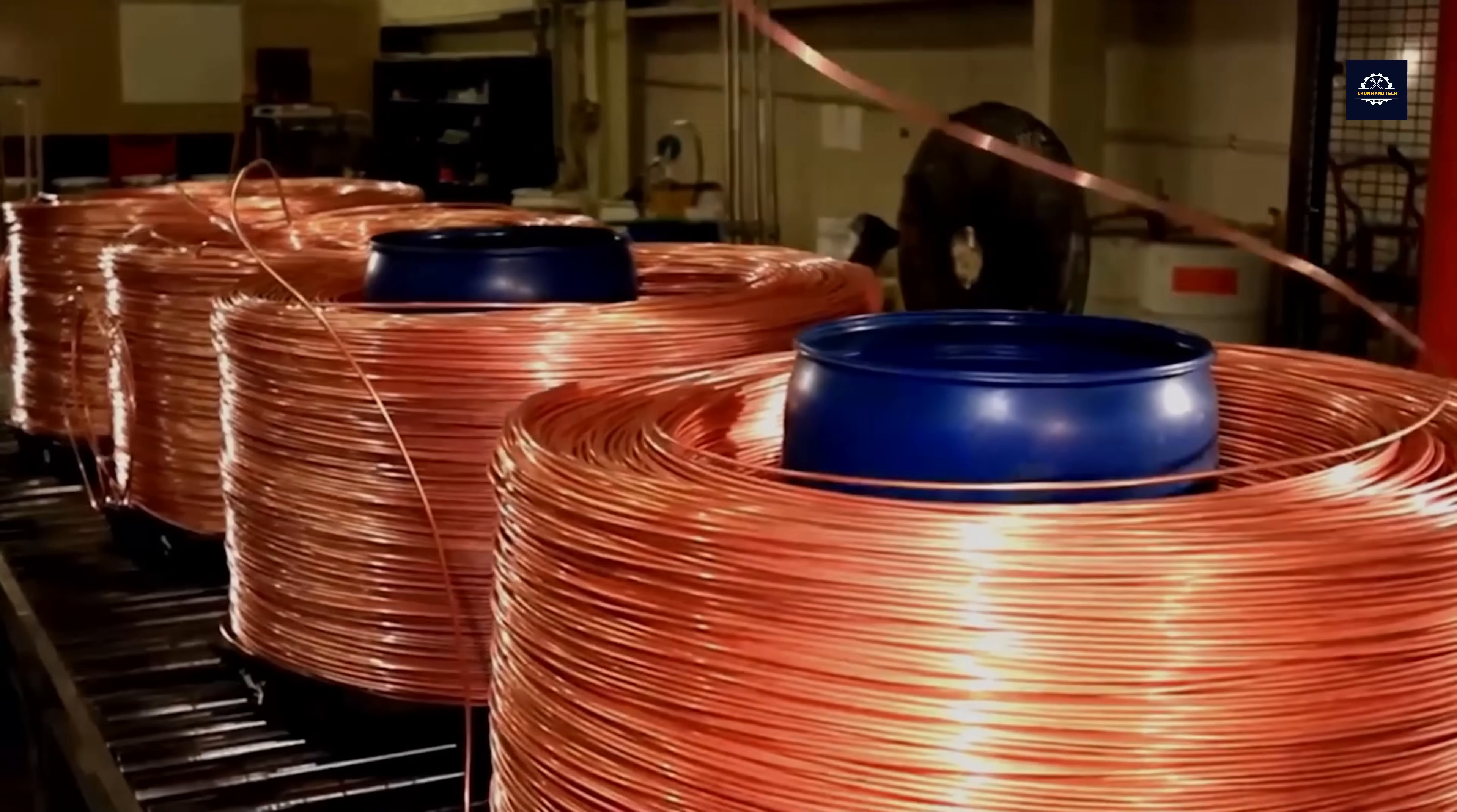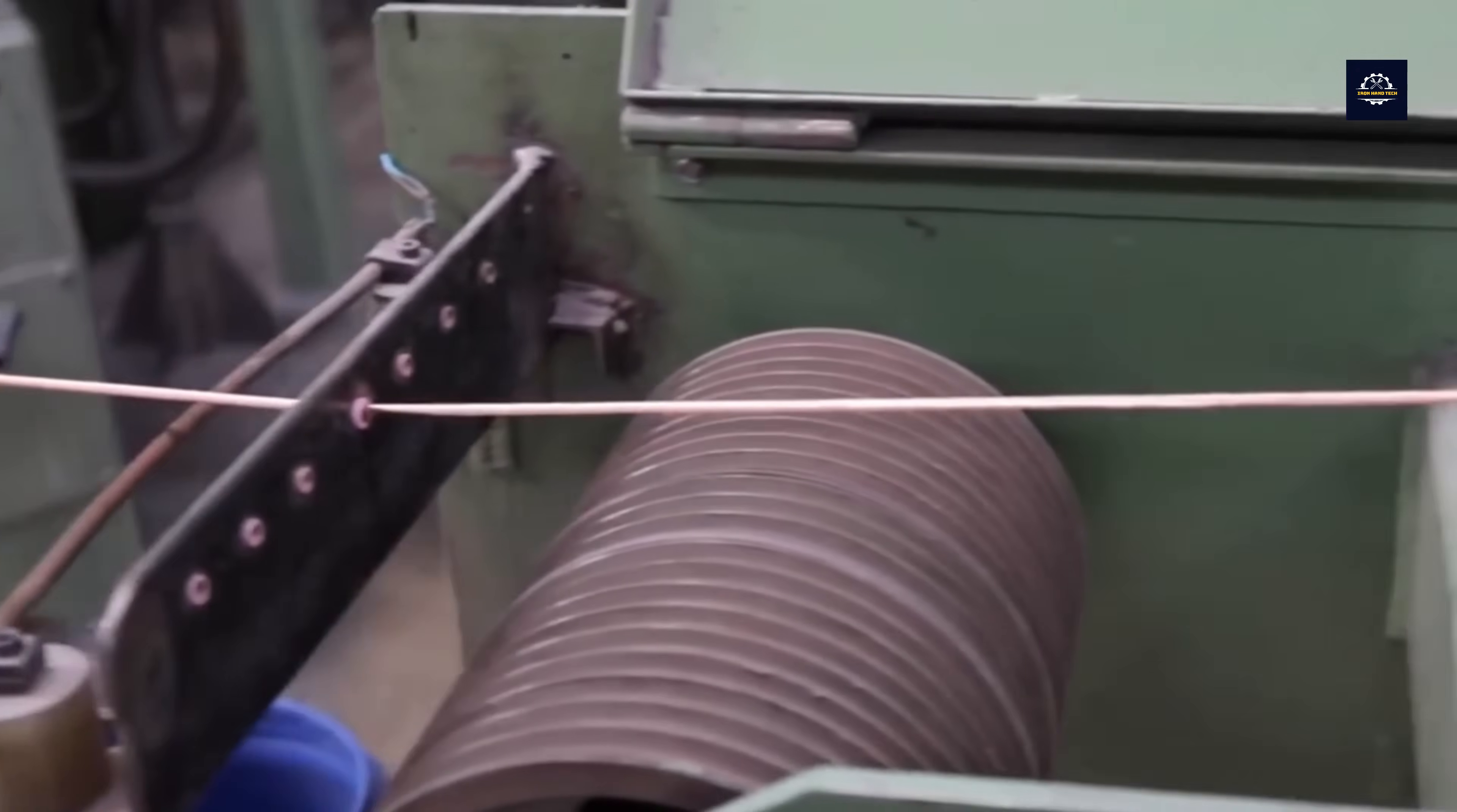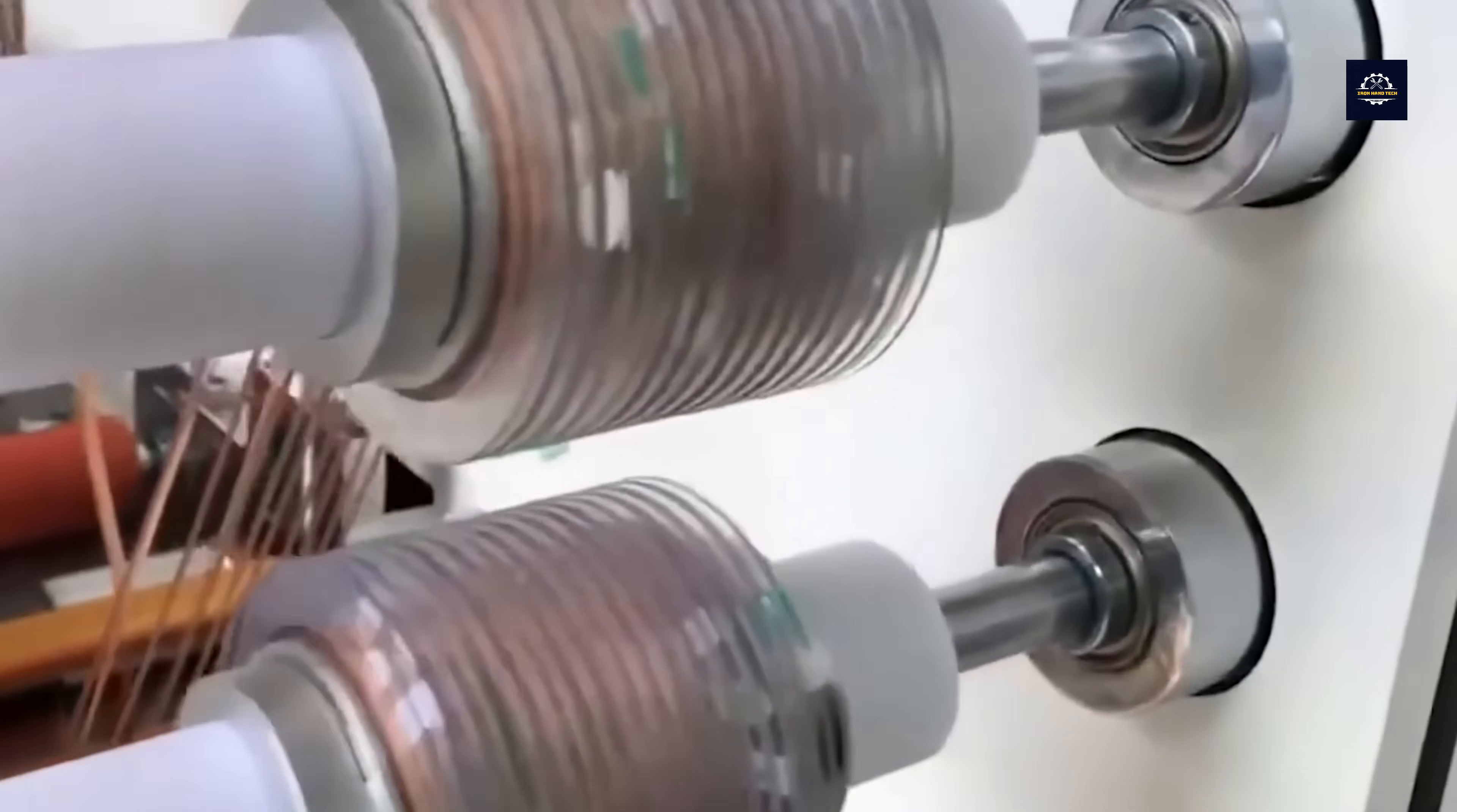After being drawn into wires, the copper wire is dipped into a chemical solution to clean the surface, removing any oxides and impurities. The wire is then dried and finally coiled into spools of various sizes for ease of transportation and use.